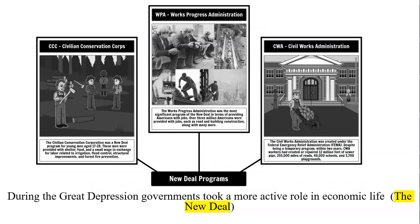During the Great Depression, the government took a more active role in economic life — this was the New Deal, a series of programs, public works projects, financial reforms, and regulations enacted by FDR between 1933 and 1939. Not all were successful, but some are still going today — Social Security, for example. They really did help America start getting out of the hole, though the war really helped America fully recover. The New Deal kind of started that process.